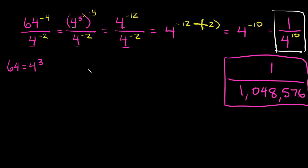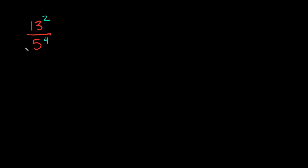So hopefully that wasn't too bad. Let's try one last example, and instead of changing the bases, we're going to play with the exponents. Here's our next example: we have 13 squared over 5 to the 4th power. As you can see, the bases — we can't really rewrite either one so it matches the other, and that's going to be common when your bases are prime. So instead we have to try and change the exponents and match them up somehow.